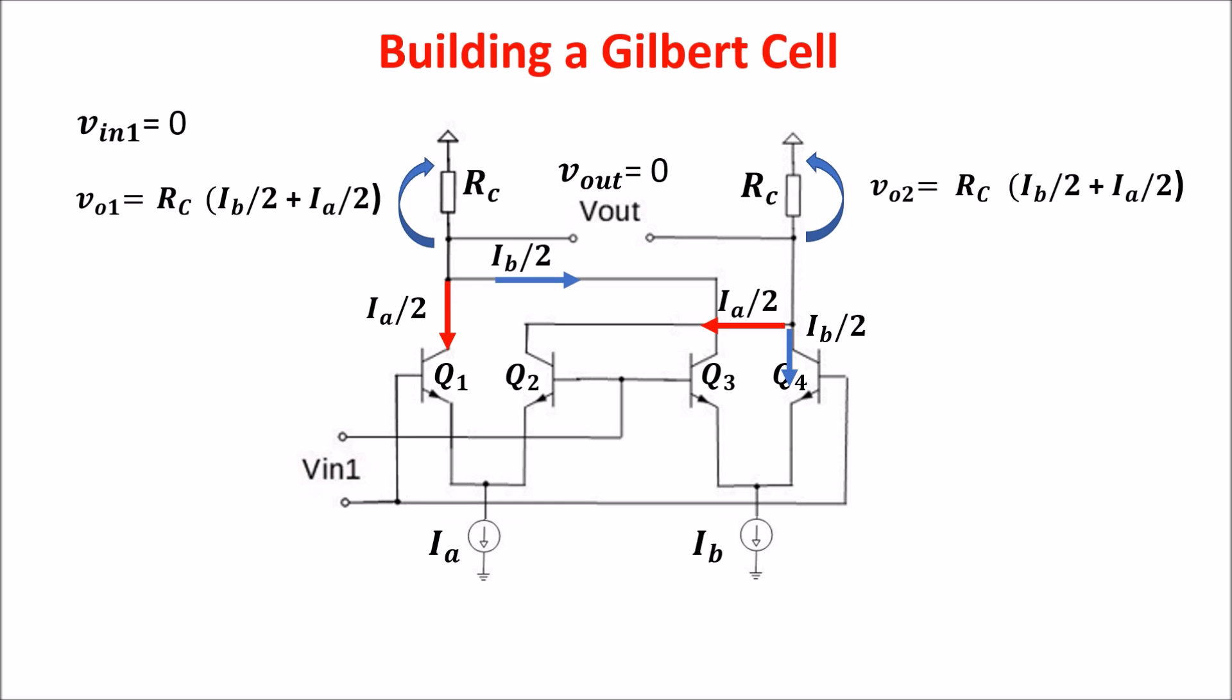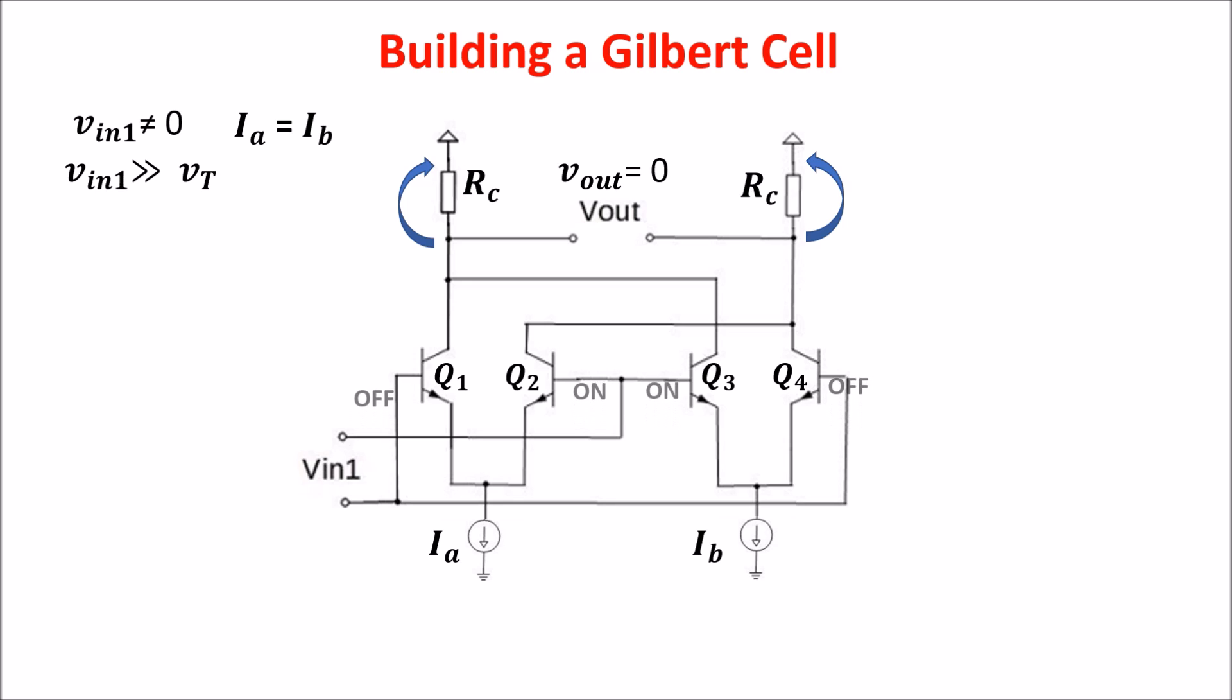Let's see now what happens if Vin1 is different from zero and Ia equals Ib, but let's see it in a qualitative way considering the large signal behavior. If Vin1 is large, then Q2 and Q3 are on and Q1 and Q4 are off. So here flows the whole Ib and here flows the whole Ia. In the other branches the current is zero. The voltage drops on RC are these, and since Ia equals Ib, Vout is equal to zero.